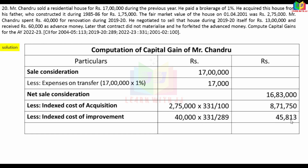Indexed cost of improvement = Rs.45,813. Net sale consideration is Rs.16,83,000. Long-term capital gain = Rs.7,65,436.